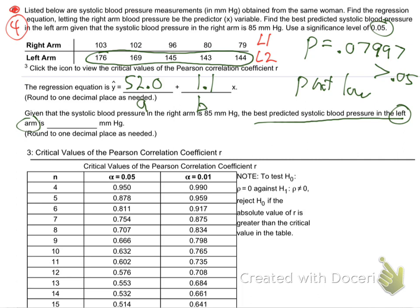I'm getting 155.4. Is that what y'all got? That's the average — that's just the average of those left arm numbers. That's the best we can predict. It's kind of lame.